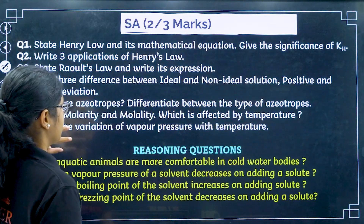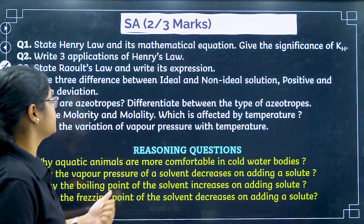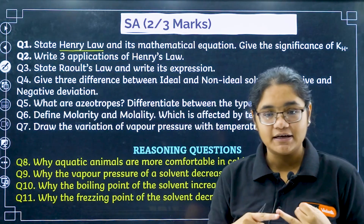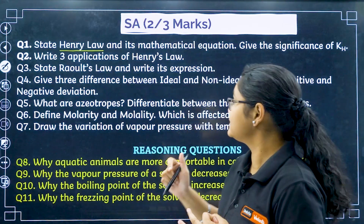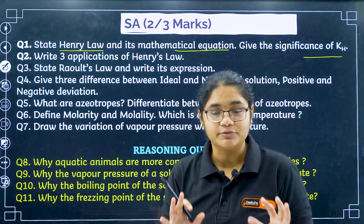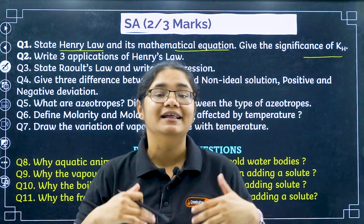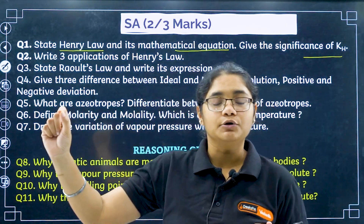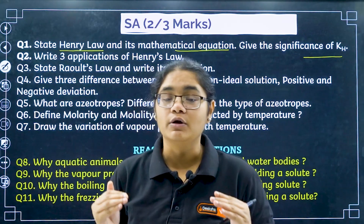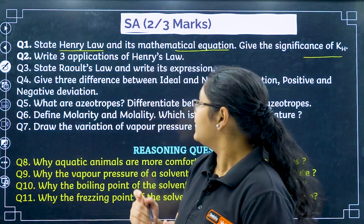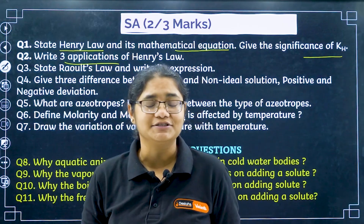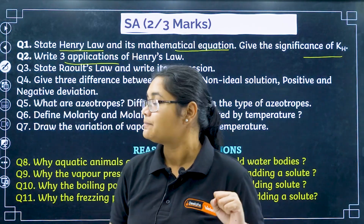In the two- or three-marker sections, Henry's Law is very important. You can be asked the statement, the mathematical expression, and the significance of the kH value. Whenever a mathematical equation is asked, remember to define all the terms — for example, in p = kH × x, explain what p, kH, and x represent. Applications of Henry's Law can be a direct three-marker or, if two applications are asked, a two-marker question.